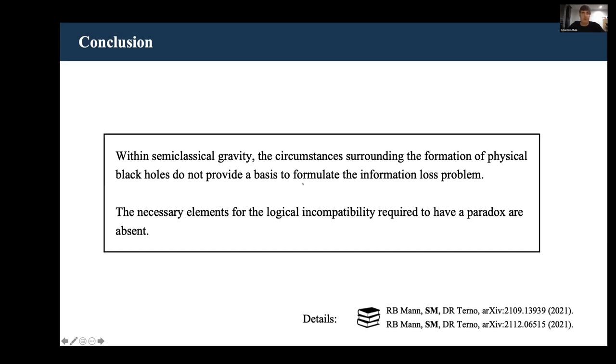Even though it can increase after, it can never attain the Hawking result that would correspond to thermal radiation. So it seems that within semiclassical gravity, it's actually not possible to formulate a standard version of the information loss paradox simply because it's impossible to simultaneously produce all of the necessary elements that you need for the logical incompatibility that gives you the paradox.